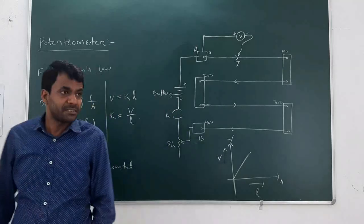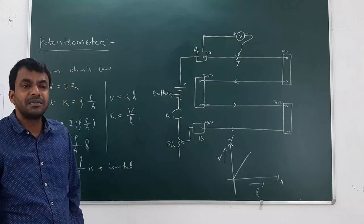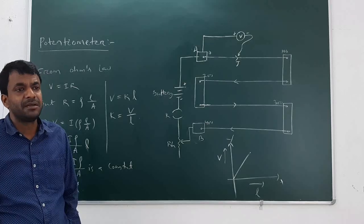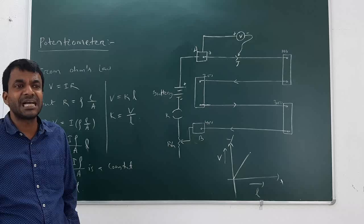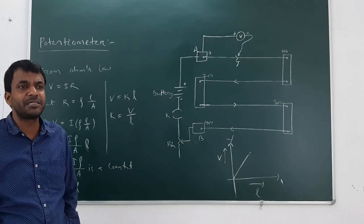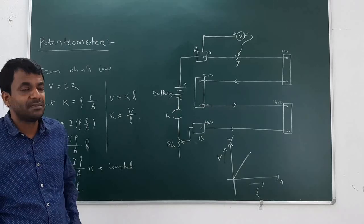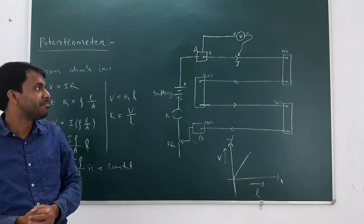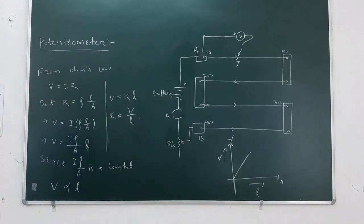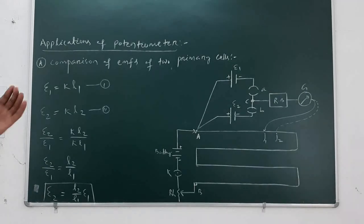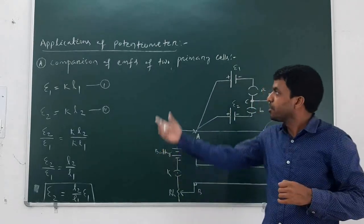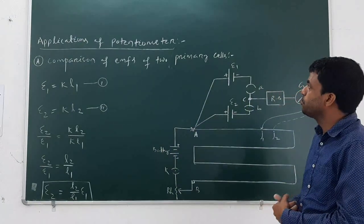Then we will discuss how the EMFs of two cells are compared using a potentiometer, and how the internal resistance of a cell is calculated using a potentiometer — the two main applications of the potentiometer. The first application is the comparison of EMFs of two primary cells.